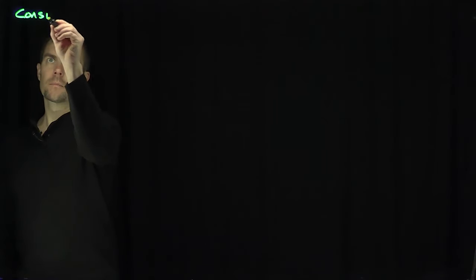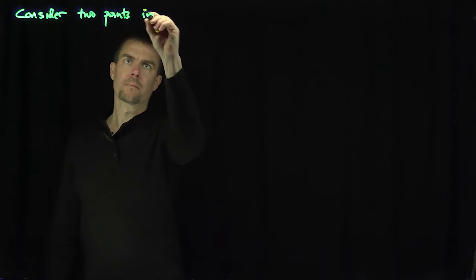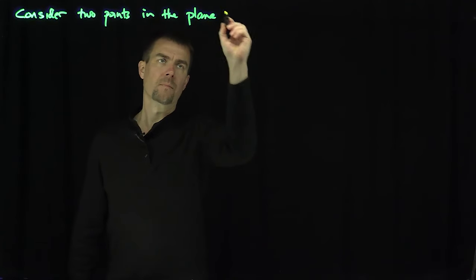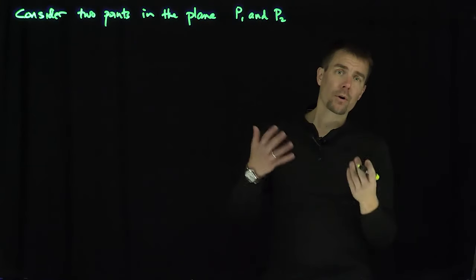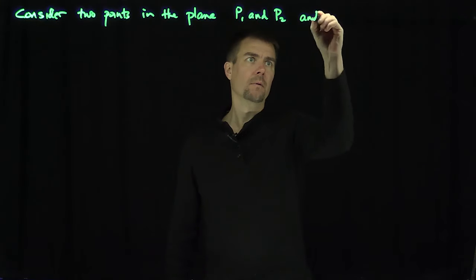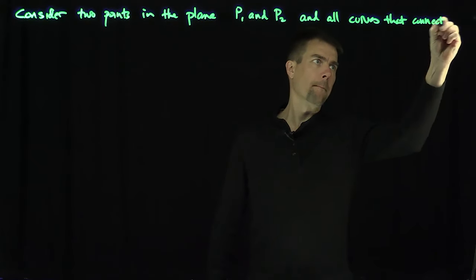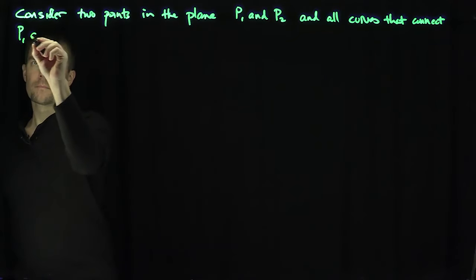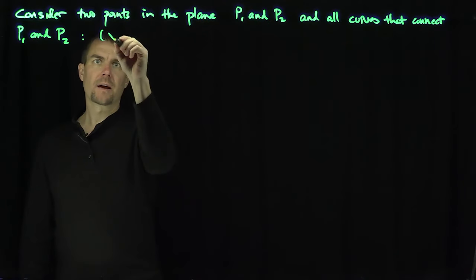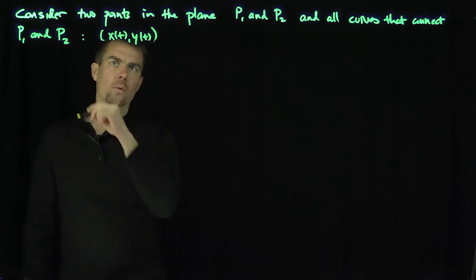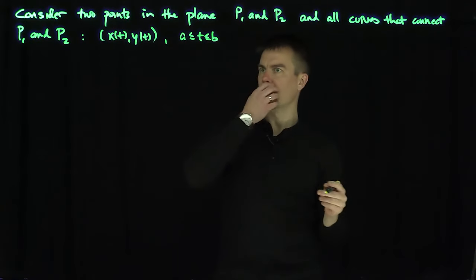Let's consider two points in the plane, p1 and p2, and then all curves that connect p1 and p2. We can parameterize those curves as x(t), y(t), where t goes between a and b. By reparameterization, I can assume that t goes between a and b.